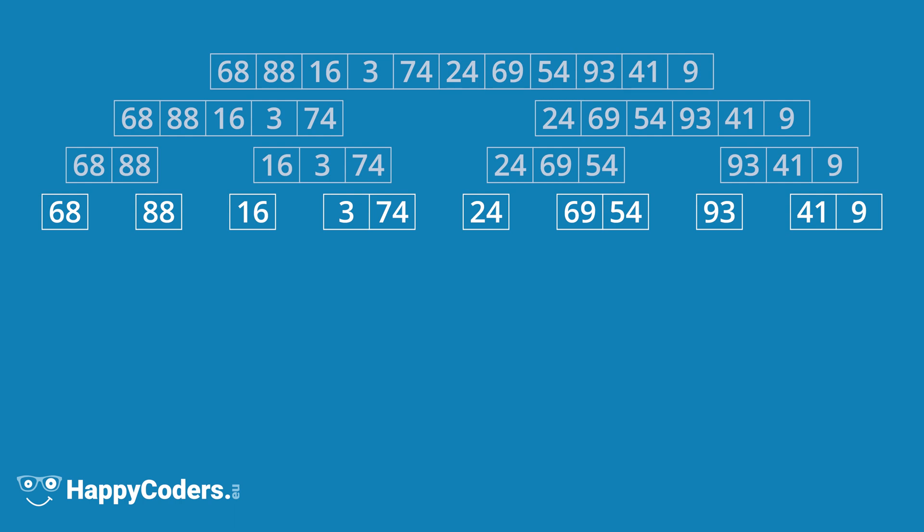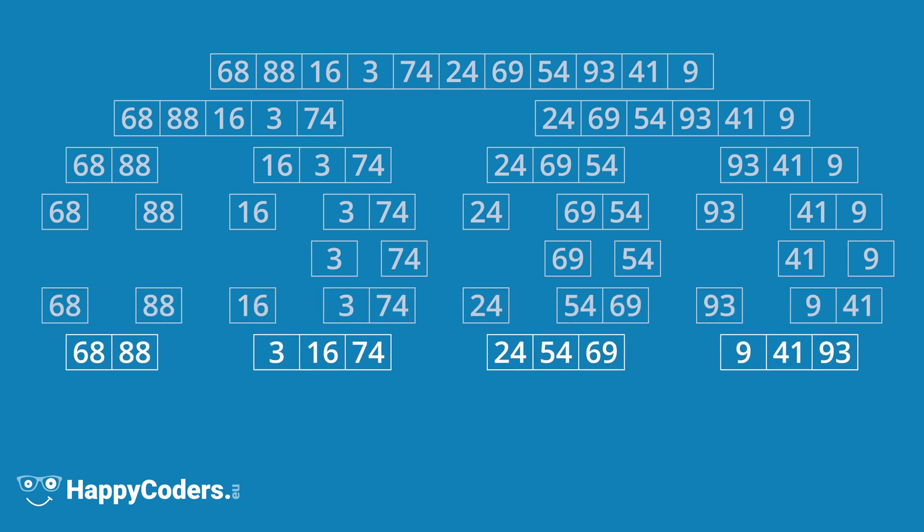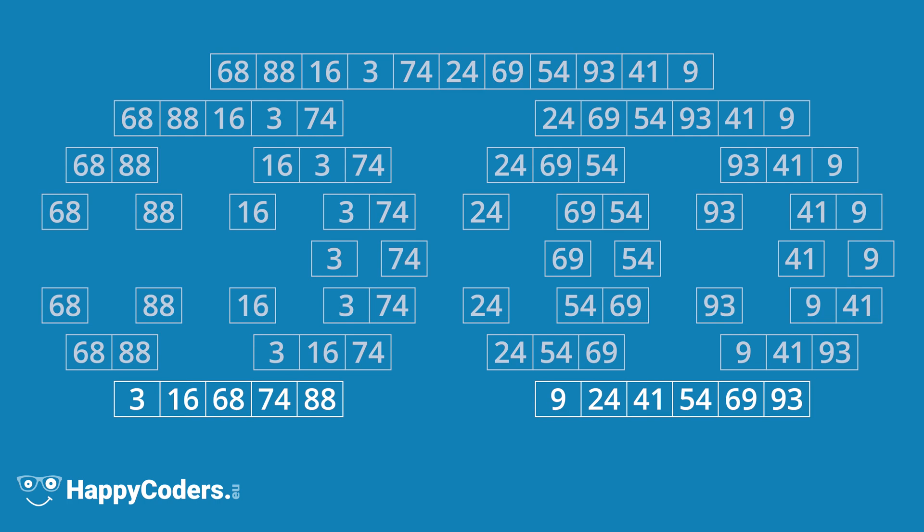Now we have 8 sublists, 5 of them with only 1 element and 3 with 2 elements. We divide the ones with 2 elements once more and merge them together again first. The other 5 partial lists remain unchanged. And so we have 8 sublists again, which we merge to 4 sublists, then to 2 sublists and finally to a single list.